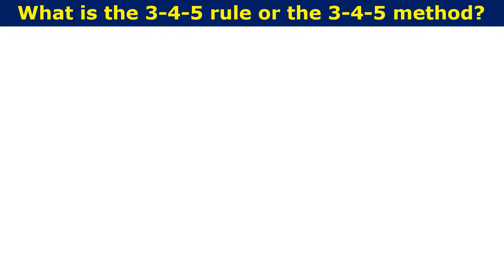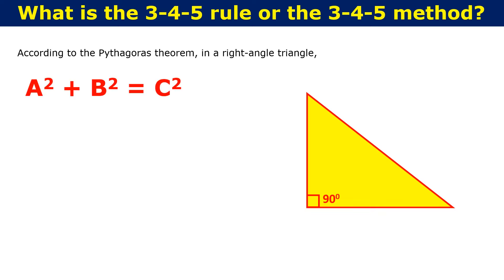What is a 3-4-5 rule or 3-4-5 method? According to the Pythagoras theorem, in a right-angled triangle, a square plus b square is equal to c square, where a, b and c are the sides of the triangle.